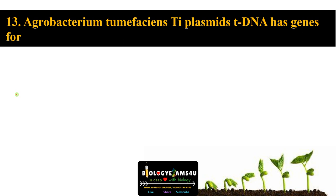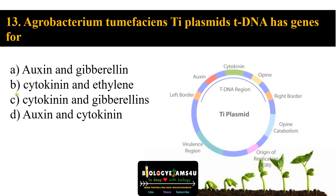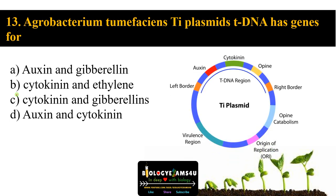Question number thirteen: Agrobacterium tumefaciens Ti plasmid (tumor-inducing plasmid) tDNA has genes for option A auxin and gibberellin, option B cytokinin and ethylene, option C cytokinin and gibberellin, option D auxin and cytokinin. This Ti plasmid tDNA is involved in cell division and differentiation. The answer is auxin and cytokinin. This region is responsible for cell division that leads to nodule formation in the plant.